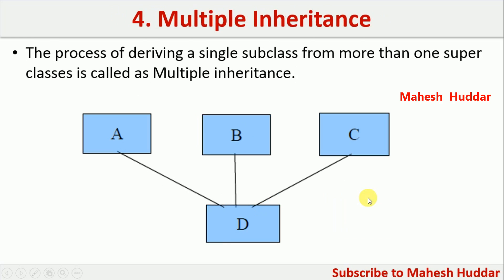The last one is multiple inheritance. In this case, a class derives the properties of multiple classes — that is, D is trying to derive the properties of A, B, and C at the same time. But by default, this particular inheritance is not supported in Java.